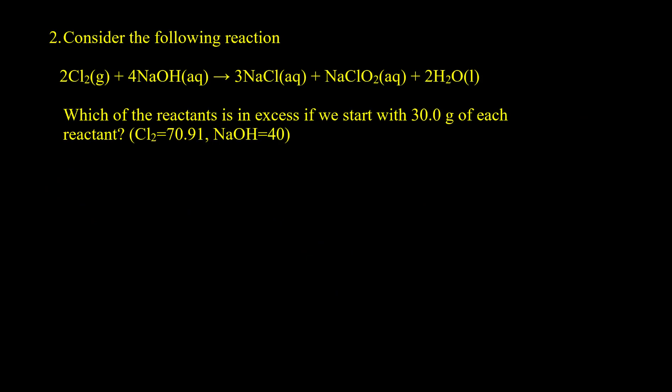For example 2, we have a reaction between chlorine and sodium hydroxide. The question asks which reactant is in excess if we start with 30 grams of each reactant. We want to find the excess reactant, not the limiting one — but one reactant will always be limiting and the other will be in excess. We need the mole-per-coefficient ratio, but here we have grams, not moles.